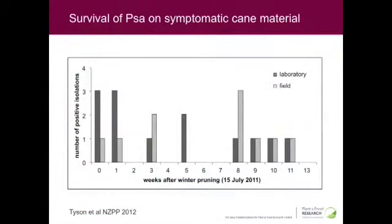For the cane material, it was more difficult because we only worked with canes and didn't know for certain whether PSA was there. We started with canes simply associated with dieback. A positive guaranteed PSA was there. In this case, we could isolate living PSA from canes 11 weeks after the beginning of the experiment, whether the cane was in the lab or kept in the field.